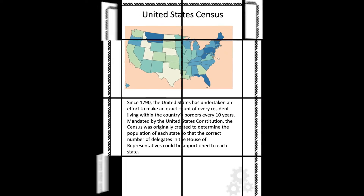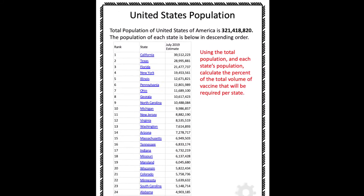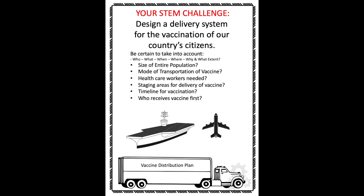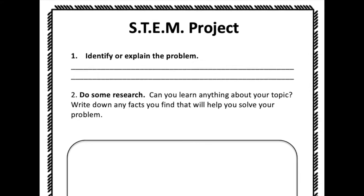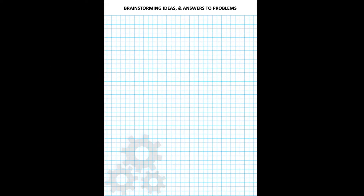We explain what the United States Census is and why it's important to understand the population in each state. The student actually figures out the percentage needed for each state, and here's their challenge: design a delivery system for the vaccine in each of the states for our country. We actually provide the STEM project format that the student fills out.